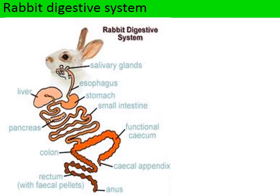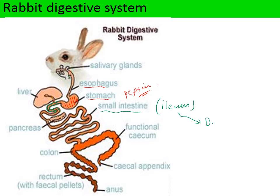The digestive system of the rabbit looks very similar to that of humans: it has an oesophagus and a muscular stomach containing hydrochloric acid and pepsin, an endopeptidase, so breakdown of protein starts in the stomach. After the stomach is the ileum — a long winding tube — which has the same role as the human ileum, digesting 90% of the food taken in. Proteins and triglycerides get digested there and the breakdown products are absorbed, much like in the human.